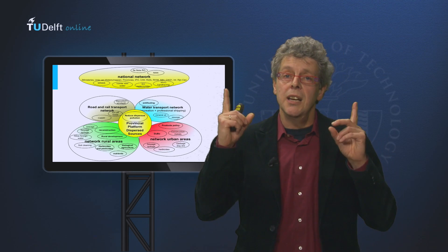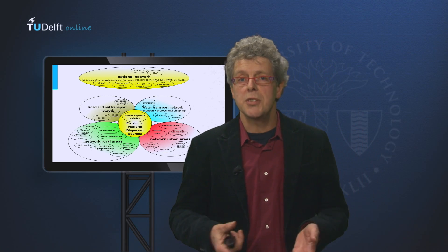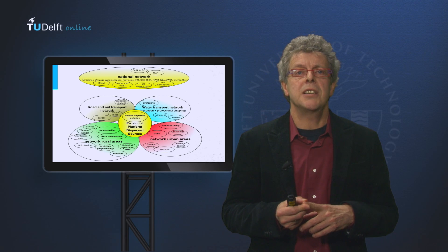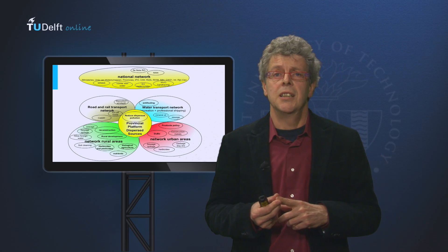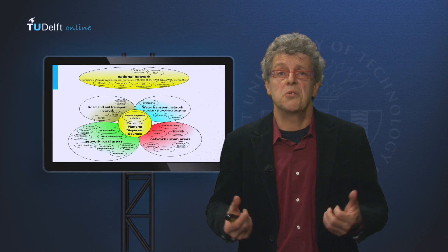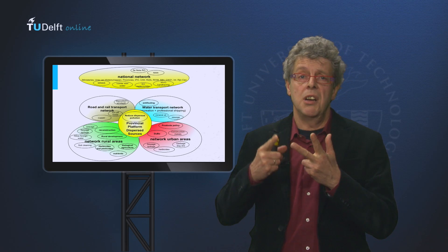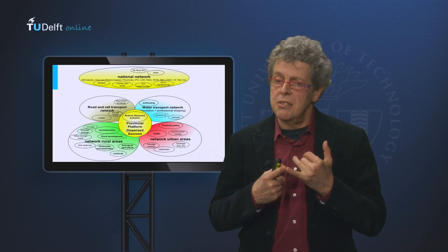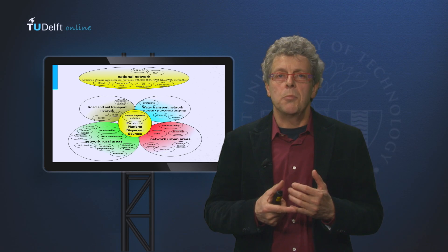The yellow oval on top represents the national and European authorities who are imposing — or more complicated, not imposing — all kinds of legislation. In these five ovals representing the different arenas you see the issues they are fighting over, for instance rural development and the use of herbicides in the rural network, garbage collection and dog waste in the urban areas.